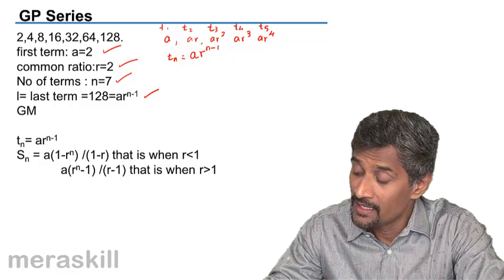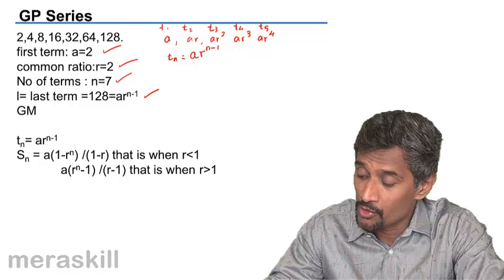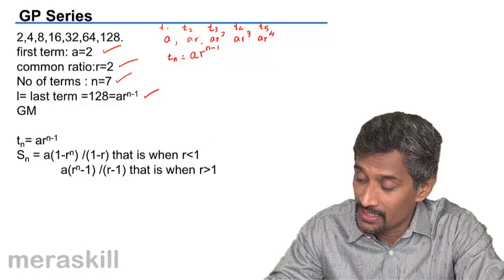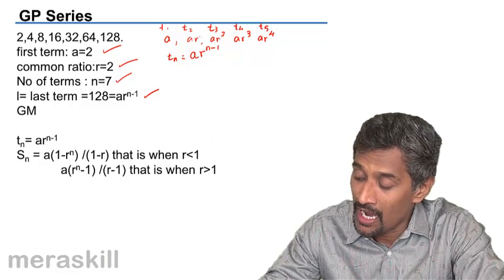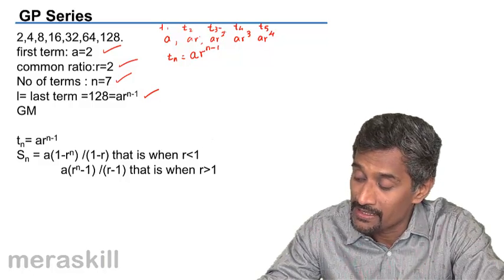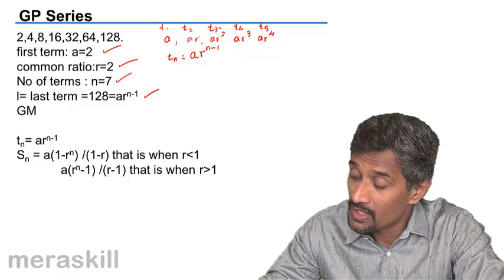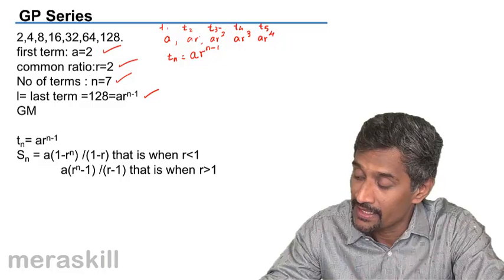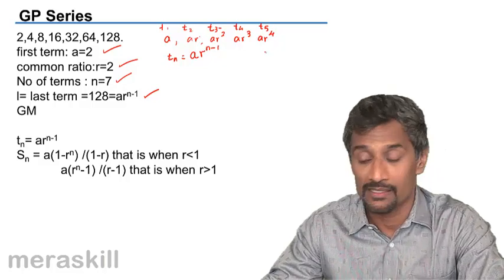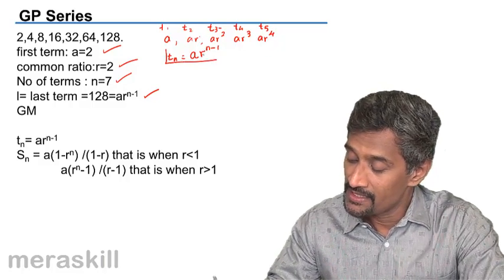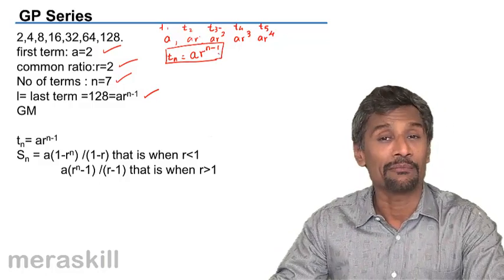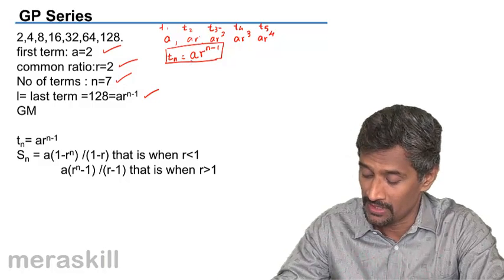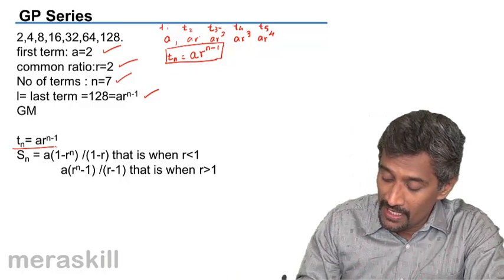For example, T2 is A into R raised to 2 minus 1, which is 1. The third term is A into R raised to 3 minus 1, which is 2. Similarly T4 is A into R raised to 4 minus 1, which is 3. So TN equals AR raised to N minus 1 is the formula for the nth term of geometric progression.